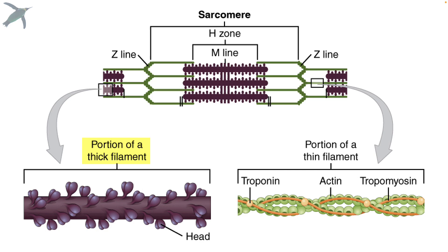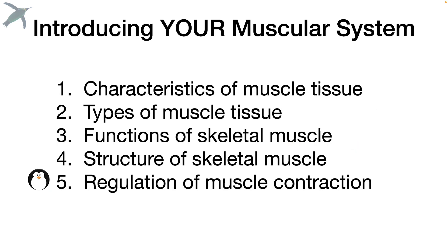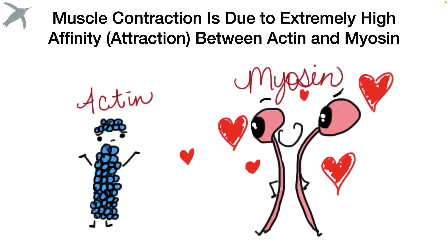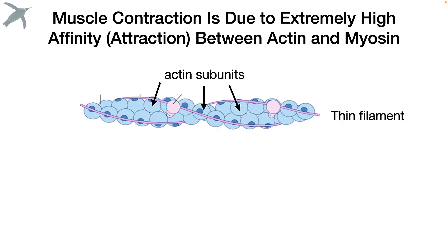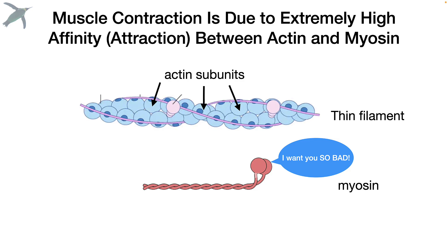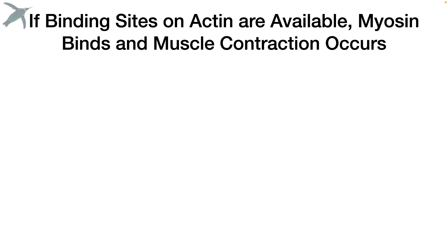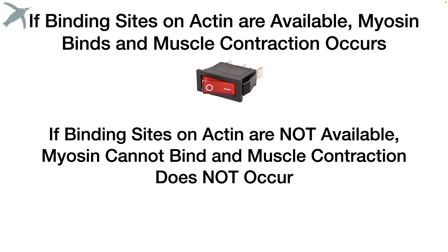The thick filament is made of a protein called myosin, and the thin filament is made up of a globular protein called actin, as well as two other regulatory proteins — we'll see how those proteins work together in the regulation of muscle contraction. Muscle contraction is due to a really high affinity between two proteins, actin and myosin. The thin filament is actin subunits twisted together in a double helical chain, and the thick filament is myosin, a long protein with two globular heads. Those globular heads of myosin want to bind to the binding sites on actin. If binding sites on actin are available, myosin will bind and contraction will occur. If the binding sites are not available, myosin can't bind and there is no contraction.